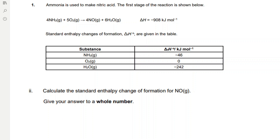We have a different question. Ammonia is used to make nitric acid. The first stage of the reaction shows 4 moles of ammonia reacting with 5 moles of oxygen to form 4 moles of nitrous oxide (NO) and 6 moles of water. The enthalpy change of this reaction is minus 908 kJ/mol. Standard enthalpy changes of formation (ΔHf) are given in the table for ammonia, oxygen, and water.